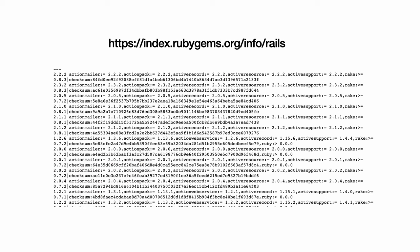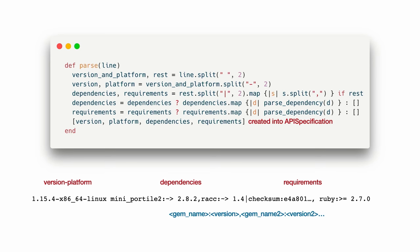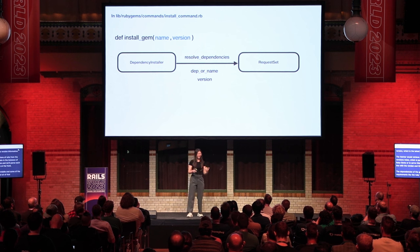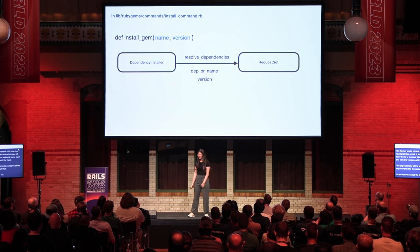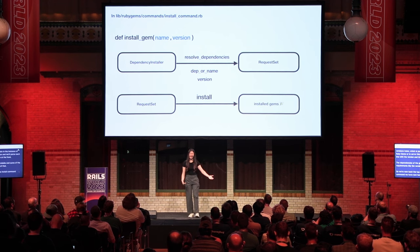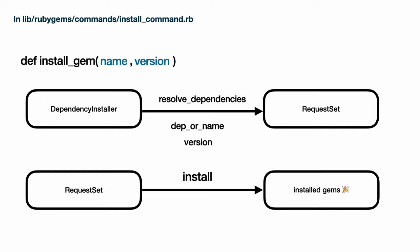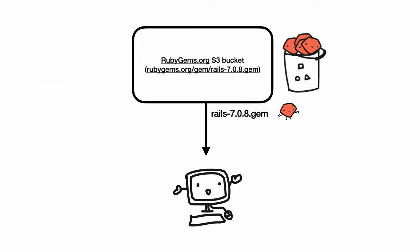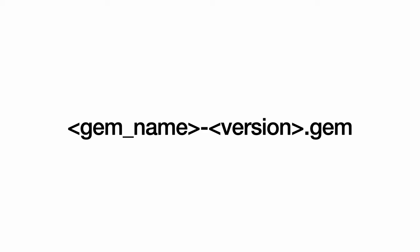To find the version information, the fetcher would retrieve specifications of Rails from the RubyGems index, which is a separate instance of RubyGems.org to serve this information. It will parse each line with the version and platform at the front, the dependencies of the gem in the middle, and some requirements like the Ruby version. We now have a request set with all the information needed to install the gems. Now it's actually time to download these gems. In install, we're concurrently downloading all the gems from the remote that aren't cached on the machine from the RubyGems.org S3 bucket.